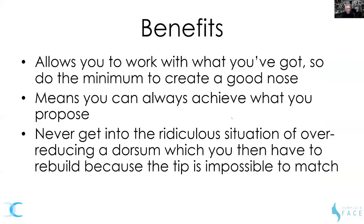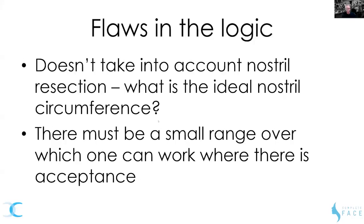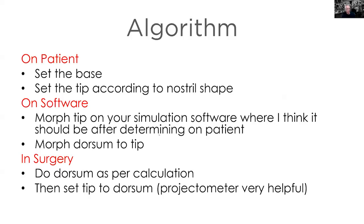With alar retraction, sometimes just projecting the nose can sort that out. The benefits of this approach: it allows you to work with what you've got, doing the minimum to create a good nose. You can always achieve what you propose and never get into the situation of over-reducing the dorsum which you then have to rebuild because the tip is impossible to match. There are flaws in the logic — it doesn't take into account nostril resection, what the ideal nostril circumference is, and sometimes with over-projection you'll need to do an alar base excision. There's a small range of acceptance, and it's particularly useful in secondary rhinoplasty.